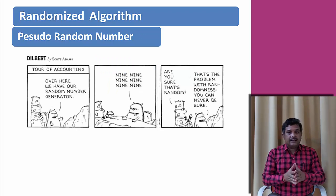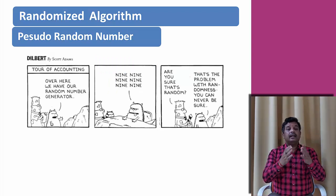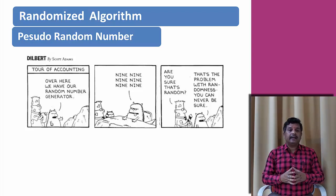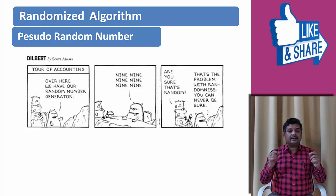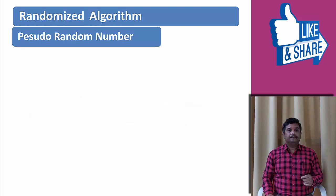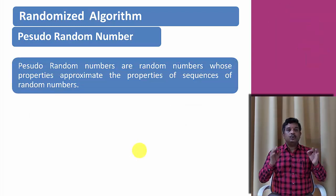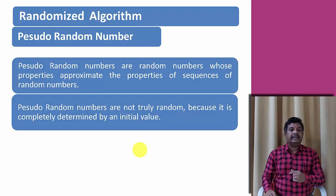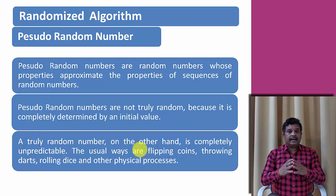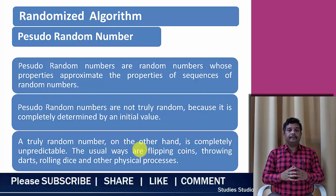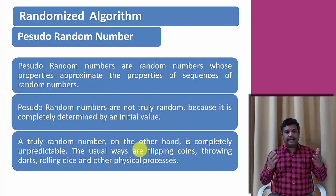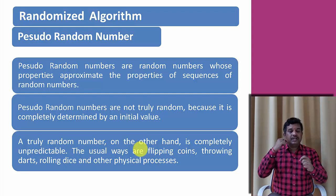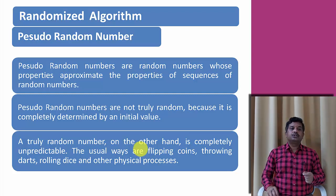Pseudo-random numbers are random numbers whose properties approximate the properties of a sequence of random numbers. Pseudo-random numbers are not truly random because they are completely determined by a set of initial values. A truly random number, on the other hand, is completely unpredictable — like flipping a coin, throwing a dart, or rolling a dice. But when we generate a random number through a program, we call it a pseudo-random number.